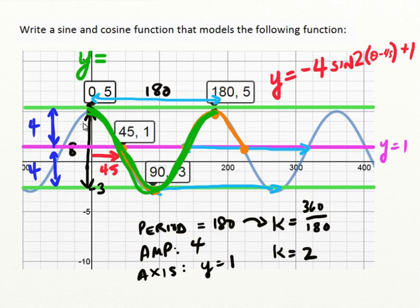So we'll write y equals. It is the normal cosine function. So it's not reflected, so it won't be negative, but it does have an amplitude of 4. We'll write cosine. Same period, so it shares the same k value. It does not have a phase shift. It doesn't need to be moved left or right. It's at zero, so we'll just have 2 theta. And then finally, it does share the same axis of y equals 1, so it would have a plus 1 at the end.